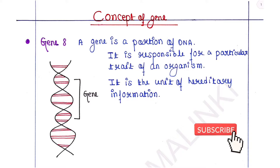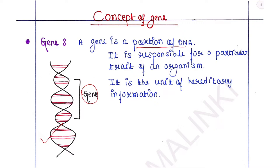A gene is basically a portion of DNA. We can see this is the DNA here, and this part of the DNA contains the gene. It is responsible for a particular trait of an organism. It is the unit of hereditary information, because it carries hereditary information and is responsible for a particular character or trait of an organism.